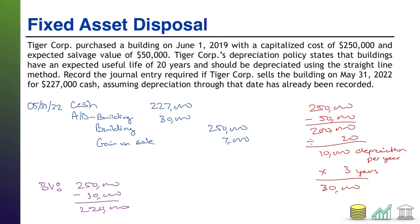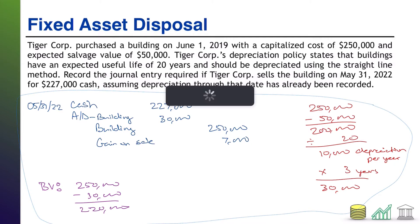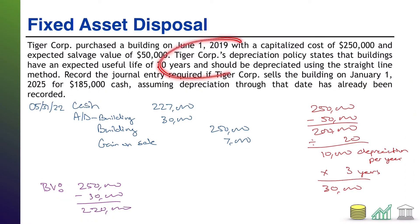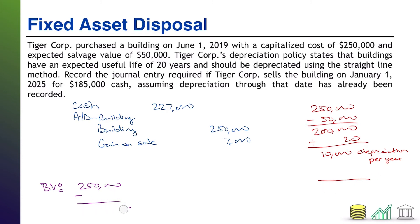We're going to use the same information set for the subsequent questions. What's different in this problem? All the base information is still the same; only the question changes. In this case we're selling the building on January 1, 2025, so the date changes. Since the date changes, the accumulated depreciation changes, which has ripple effects. The cash amount also changes. So we'll have to redetermine whether we break even or have a gain or a loss.